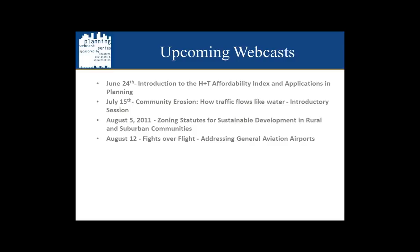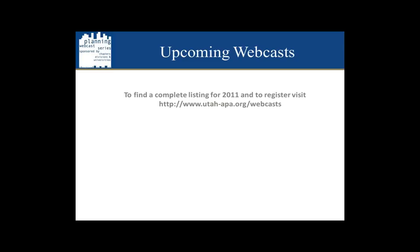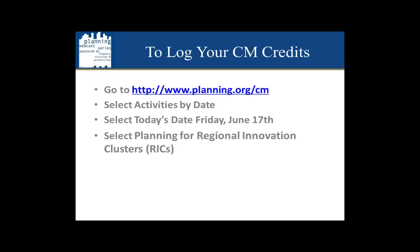Upcoming webcasts: our next one will be on June 24th on the introduction to the H+T Affordability Index and applications in planning, then in July on community erosion, and on August 5th on zoning stats, and August 12th, fights over flight. Today's session is already approved for 1.5 CM credits. To log your CM credits, go to www.planning.org/cm.